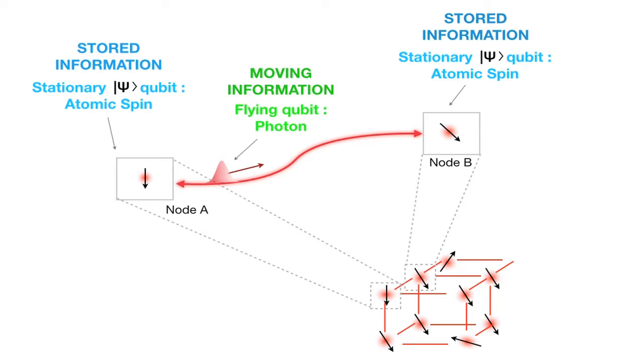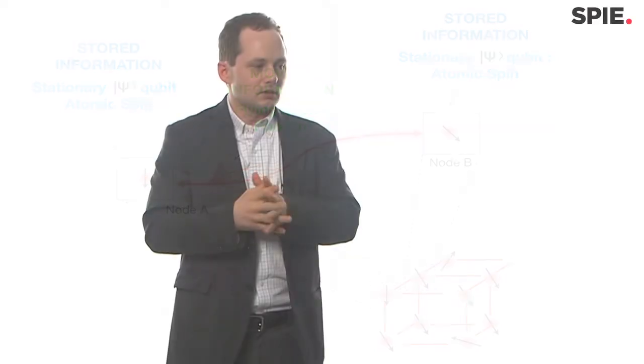And most of our technologies are basically trying to combine these two ingredients into small networks of quantum memories. One key goal for us is to build essentially a small quantum computer that consists of a handful or a dozen or so quantum memories, quantum bits, that would act as a repeater.